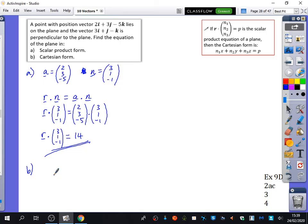Now we already know how to do part B. It says what is the Cartesian form. Well I just showed you the relationship between these two things. You can either write X, Y, Z for R or you can just say okay well I've clearly got 3X plus Y minus Z equals 14.